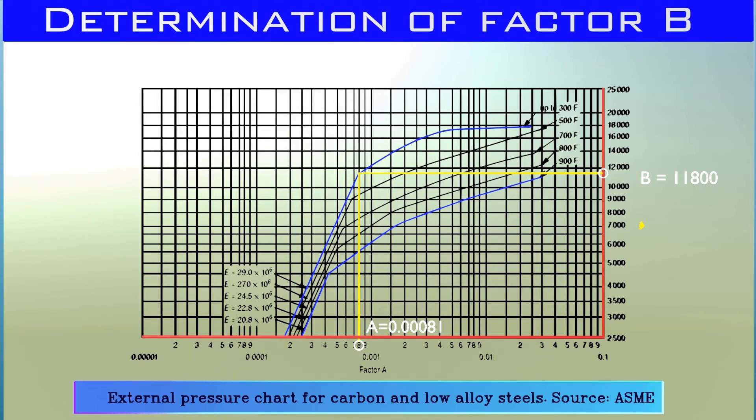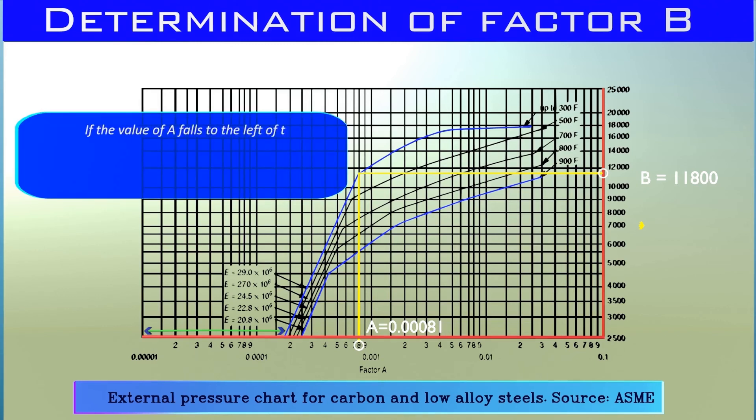Okay, but if the value of factor A falls to the left of the material lines and there is no curve in this region, then how can we find factor B? For this case, there is an equation available and we can directly find allowable pressure for this vessel. In this case, we have no need of factor A at all.